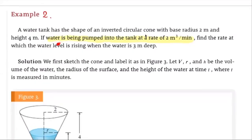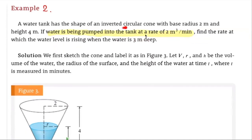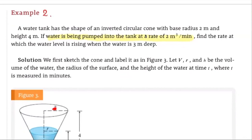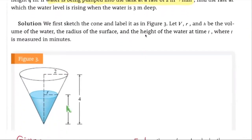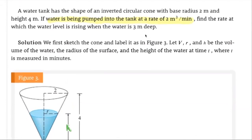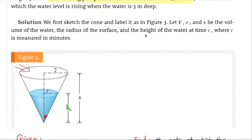This is a Related Rates problem. We're given that water is being pumped into the tank at a certain rate and we're trying to find the rate at which the water level is rising — so these two rates are related. First, we sketch the cone and enter all the given information. The radius is 2 meters, the height of the cone is 4 meters, and water is being pumped in at 2 cubic meters per minute, which corresponds to the rate at which the volume of water is increasing.